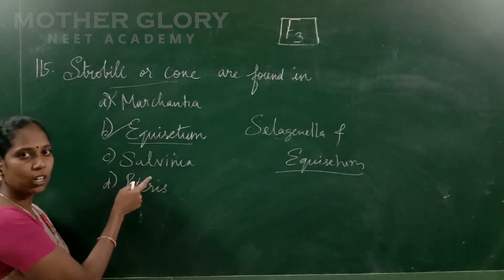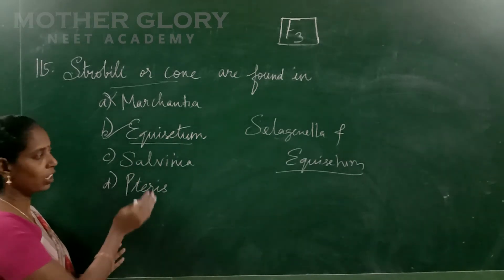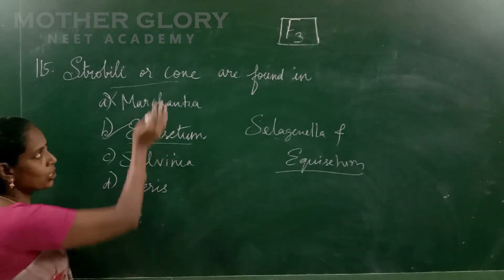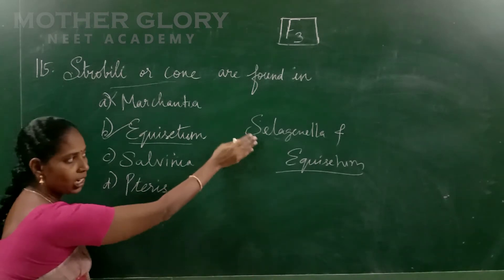That is Salvinia. Salvinia is a pteridophyte plant. It is a fern plant. The fern plant is the higher type of pteridophytes. This is a fern plant, so the fern plant is not the same as Equisetum.